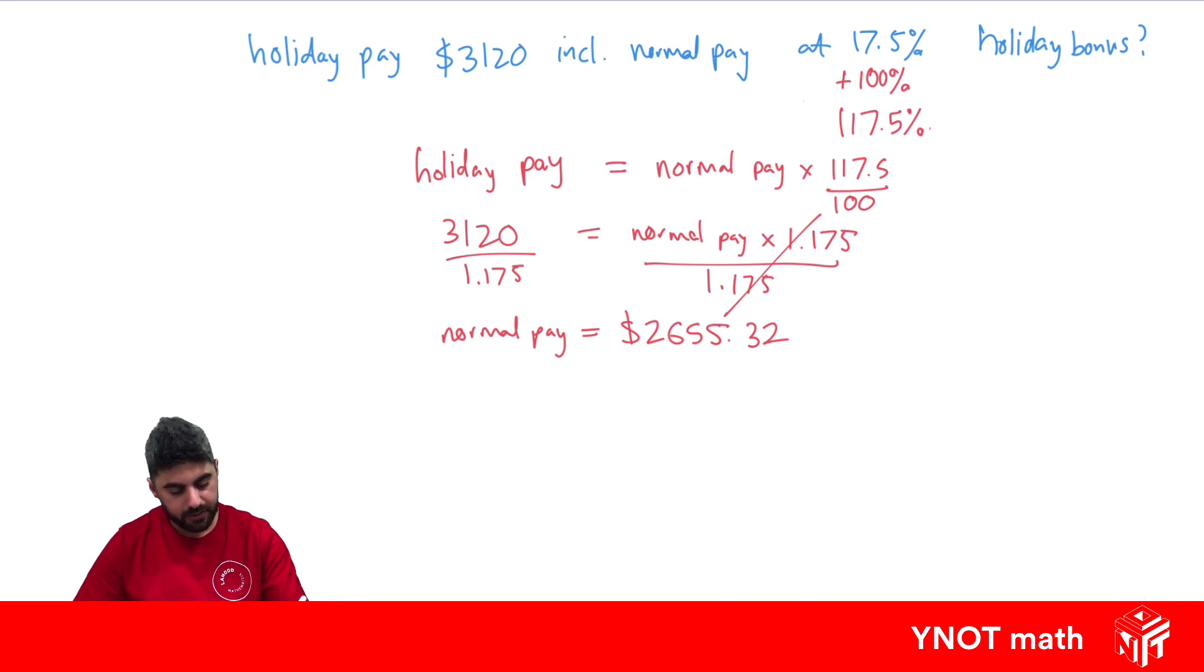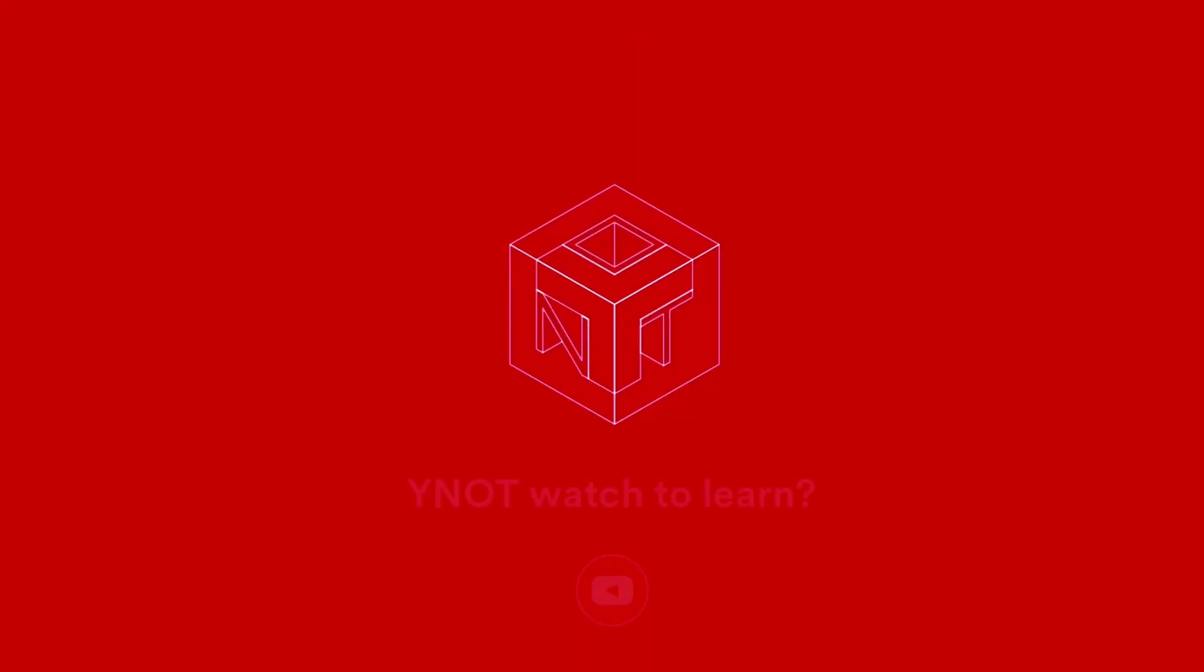Now we can find our holiday bonus. We simply take our holiday pay minus our normal pay, which tells us how much extra we earn in the holidays. Doing that gives us $464.68 for our holiday bonus.